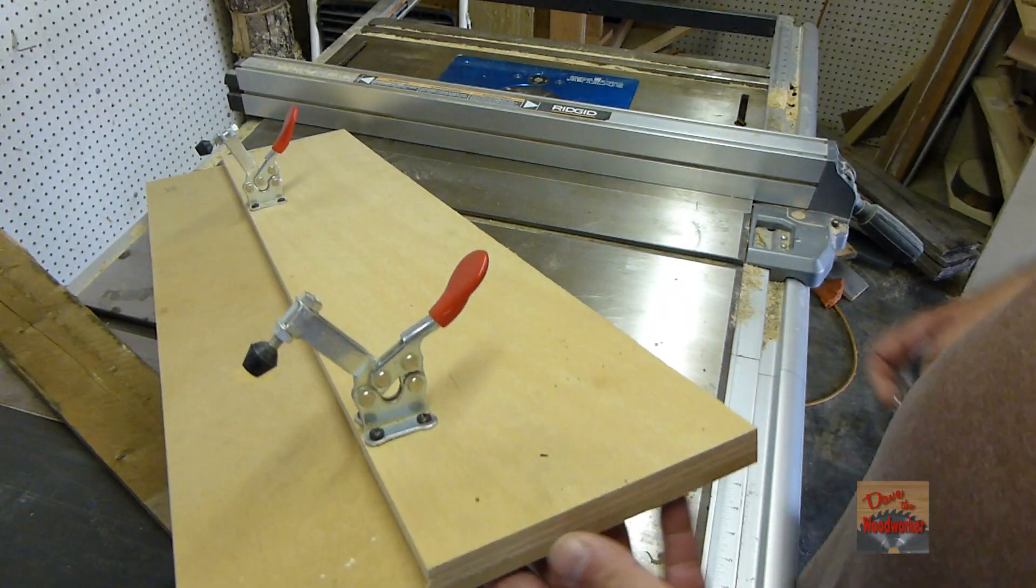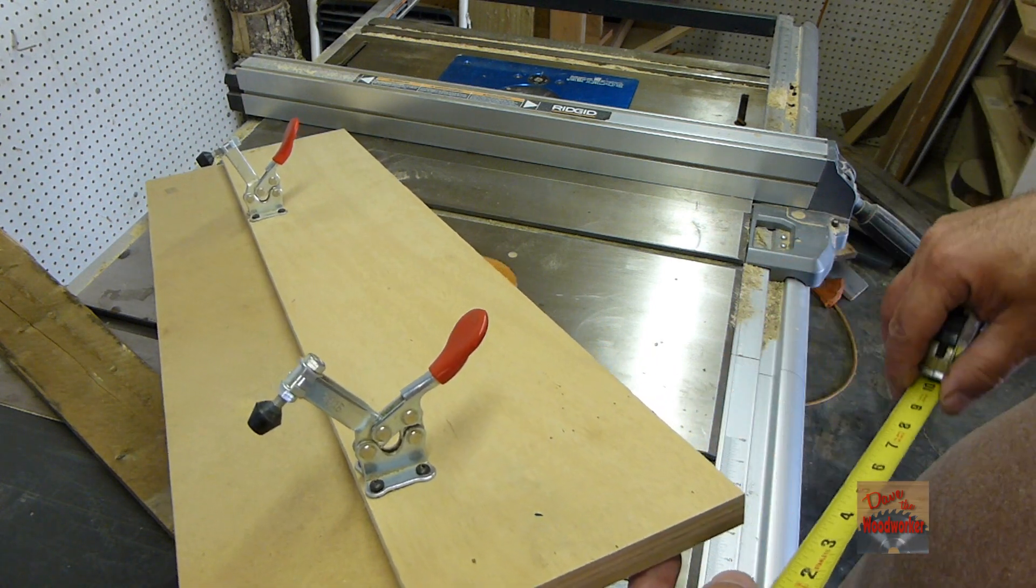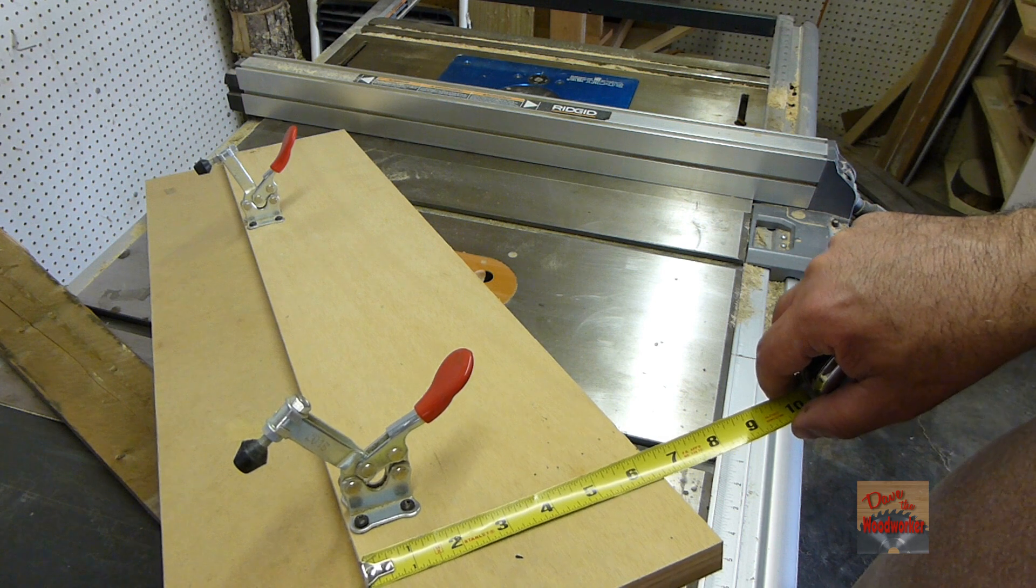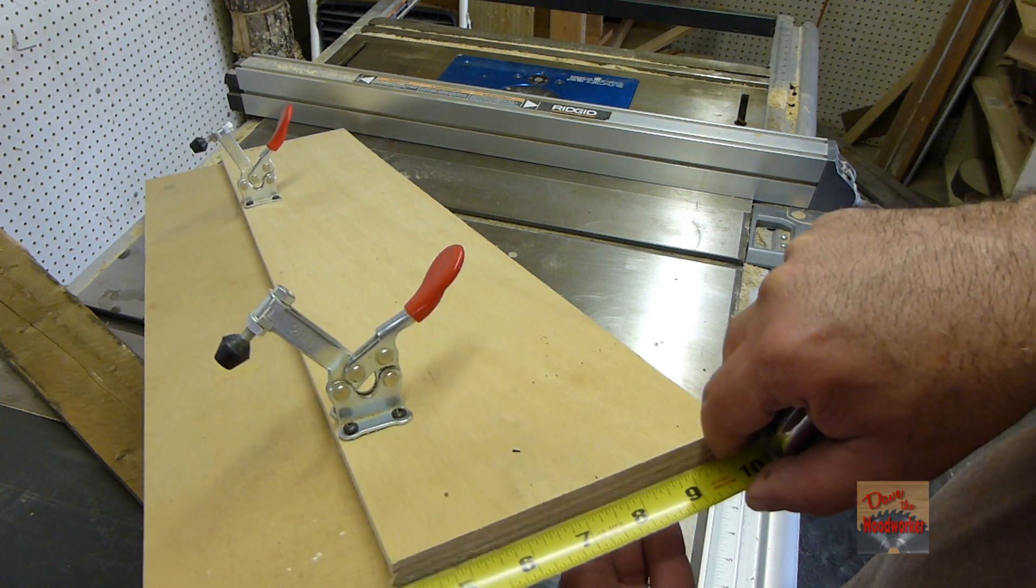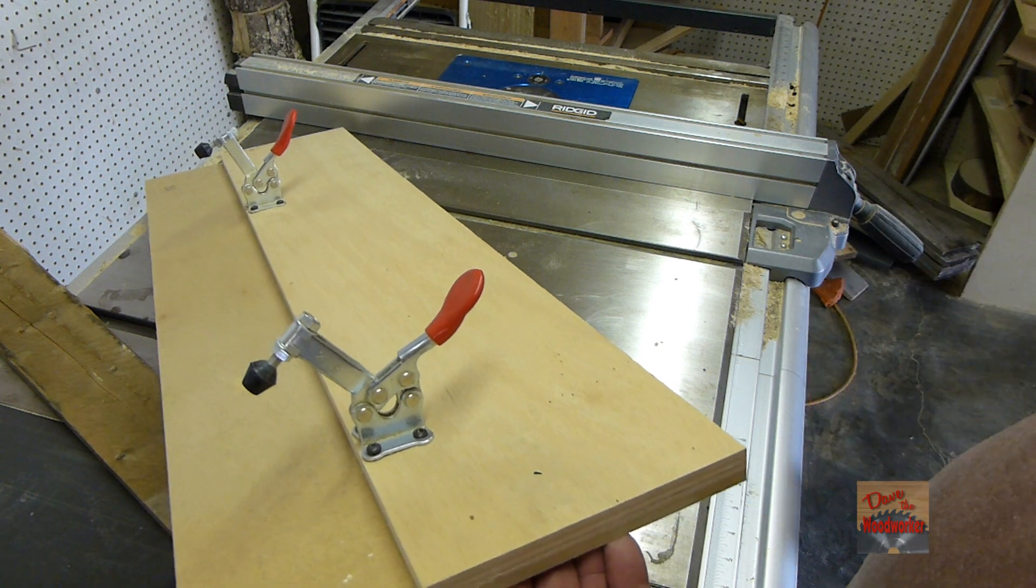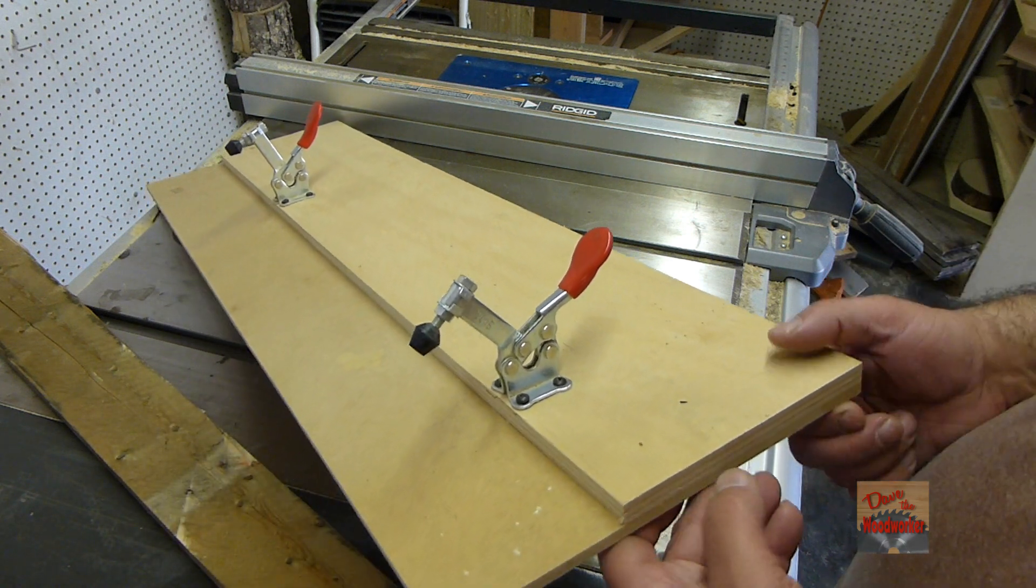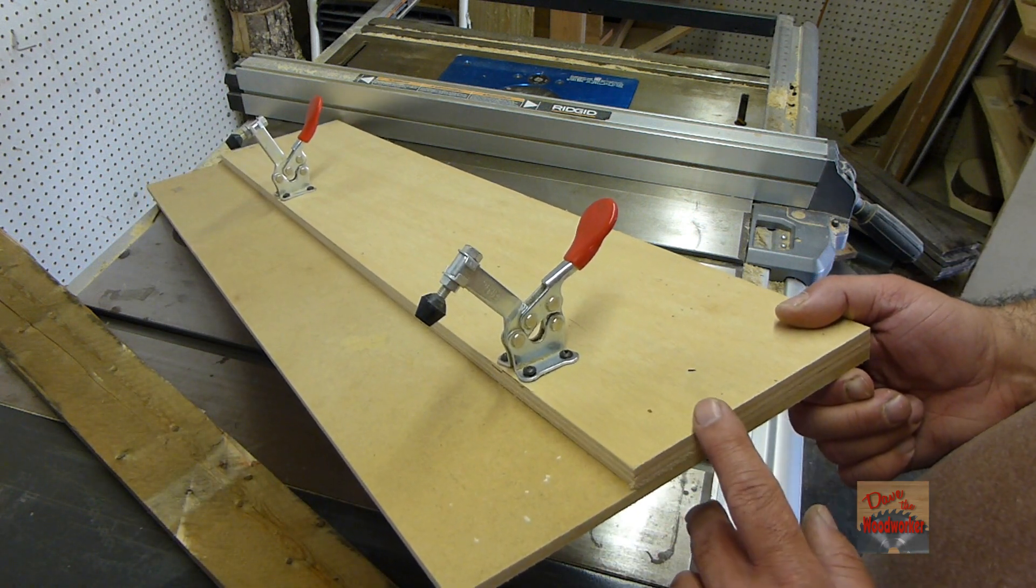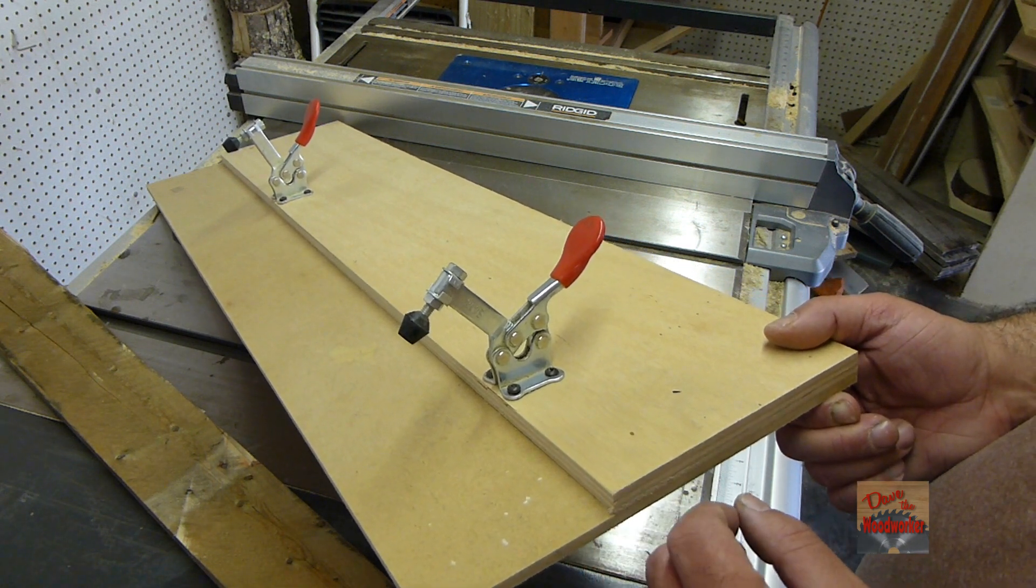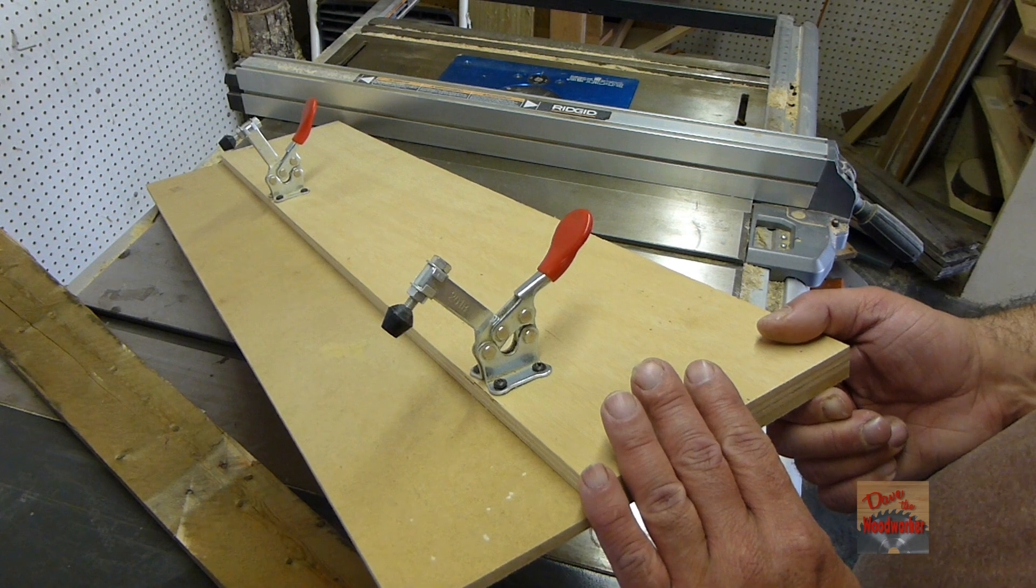The piece of plywood here, this is some scrap I had laying on hand. It's roughly six and a half inches wide and the fiberboard is about ten and a quarter inches wide. Now you can make it as wide as you want. I wouldn't make it too narrow but this is just some scrap pieces I had on hand.